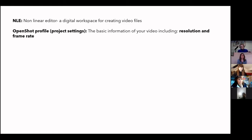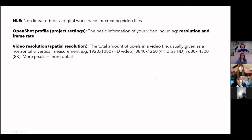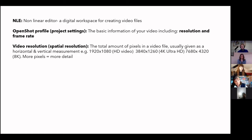In OpenShot, the project settings are called the OpenShot profile — your resolution and frame rate. Video resolution, which you might know from buying a TV or camera — HD, 4K, Ultra HD — is essentially the amount of pixels in a frame. HD video is 1,920 pixels across by 1,080 pixels up. This is a way of measuring the total pixel count. The more pixels, the more detail you retain. 4K looks more detailed and sharper than standard HD. We're also going down to 8K soon.